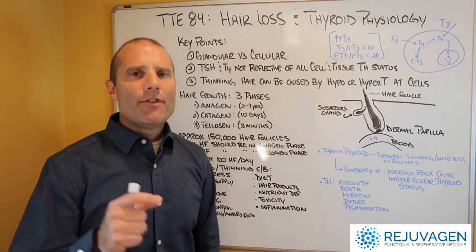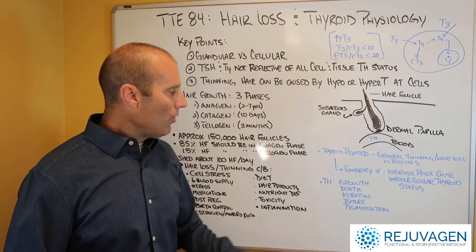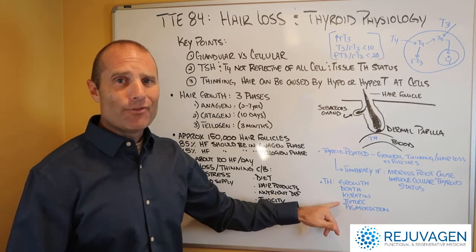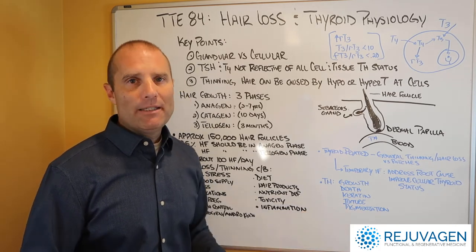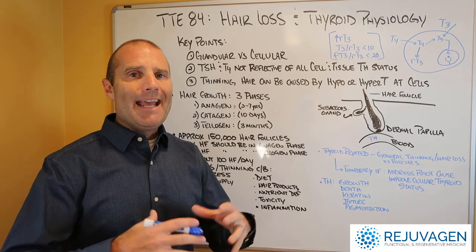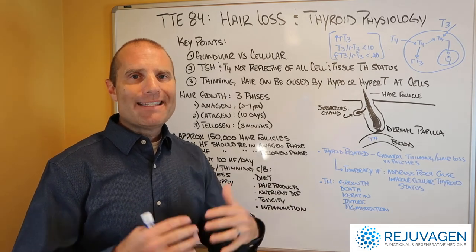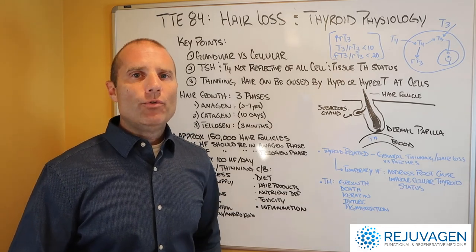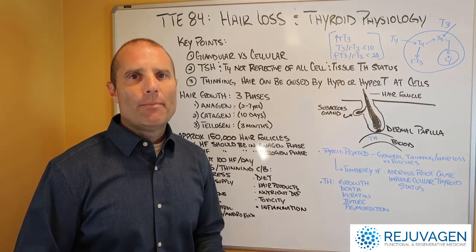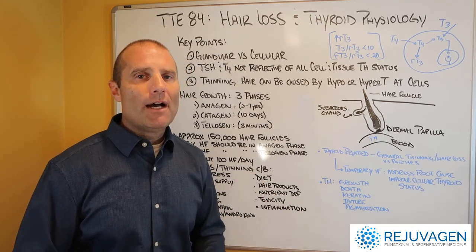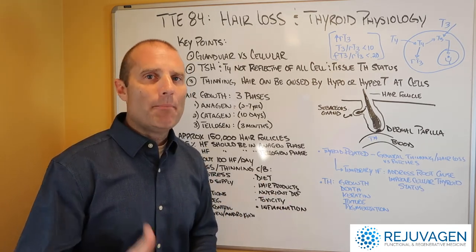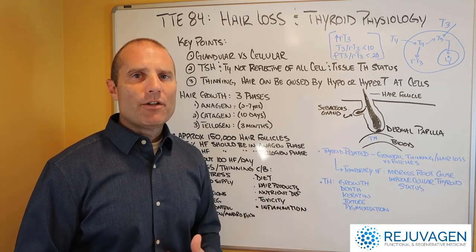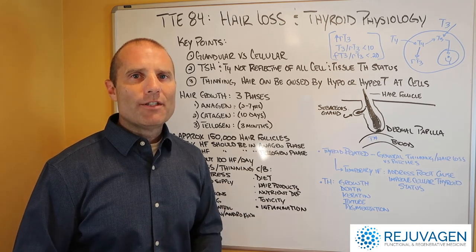To wrap this up: thyroid hormone plays a key role in every aspect of hair physiology — the growth phase, the death phase, the keratin levels, the texture, and the pigmentation. So if you have problems in any phase of your hair cycle, thyroid hormone probably plays a role and we need to get to the root cause. That's really where functional medicine shines. I wish we could just tell you to take biotin or selenium and it will fix it, but ultimately if there's some type of cell stress, you have to get to that root cause issue.